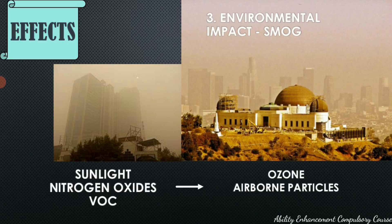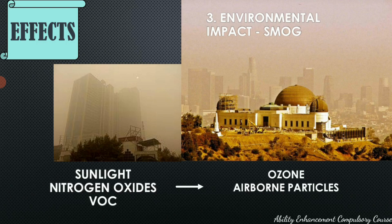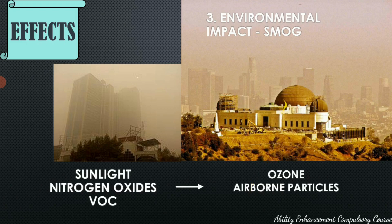When looking at the impact of air pollutants on the environment, there are four main impacts. The first is smog, formed when fog and smoke mix. Smog is common in cities like Delhi, Los Angeles, Athens, and Shanghai. In the presence of sunlight, nitrogen oxides and volatile organic compounds get converted into ozone and other airborne particles that do not escape the atmosphere, creating a dangerous fog-like layer. Smog is an extreme impact of air pollution specifically.